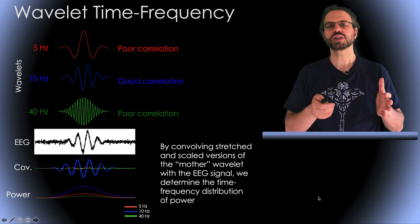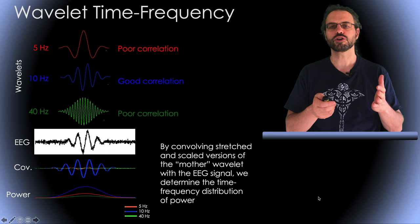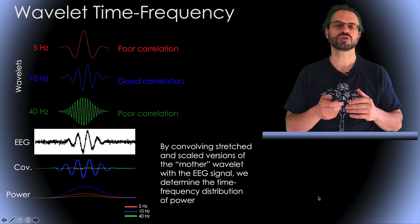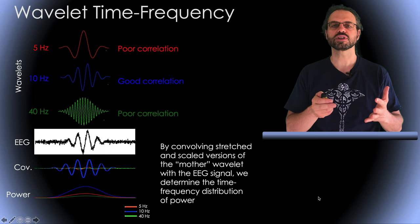By convolving stretched and scaled versions of what is commonly called the mother wavelet with the EEG signal, we determine the power at different times and frequencies. Here on the bottom, you can see power for the 5Hz version of the wavelet in red, for the 10Hz version in blue and for the 40Hz version in green. Only the 10Hz version shows a substantial increase in power because the EEG signal only contains oscillations at 10Hz.